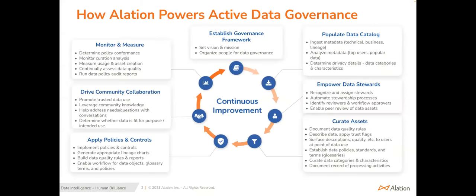Active data governance is a continuous process, so we represent the stages on our governance wheel. The first step is to identify your initial governance group and define the vision and mission for your governance program. Then you need to identify a use case that will deliver measurable business value and use your governance program to address that use case first. Your overall program may have goals to have all data assets monitored, curated, and classified, but you have to start somewhere.